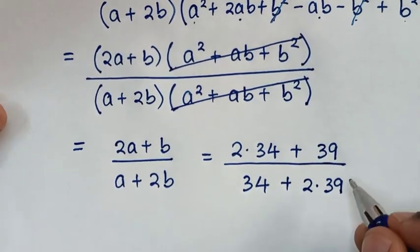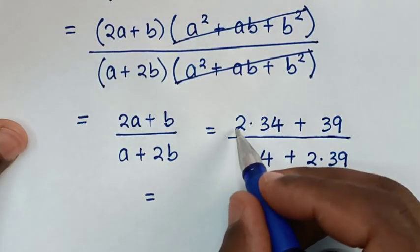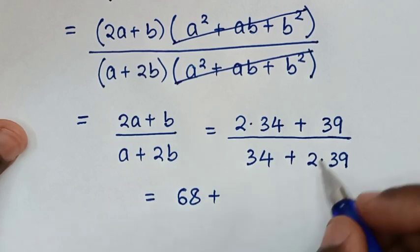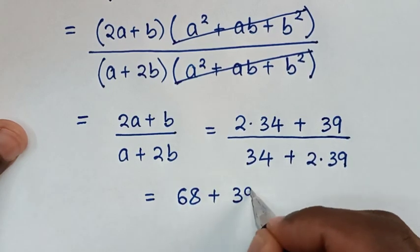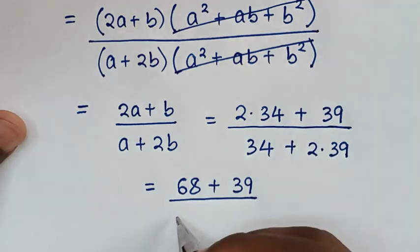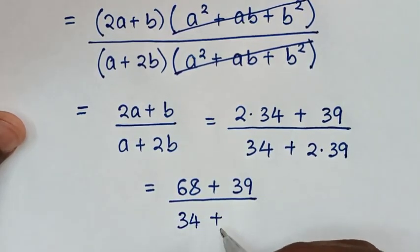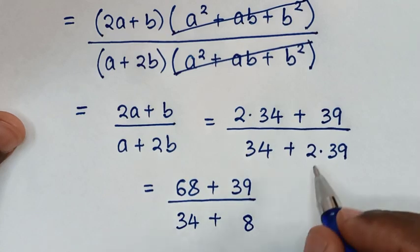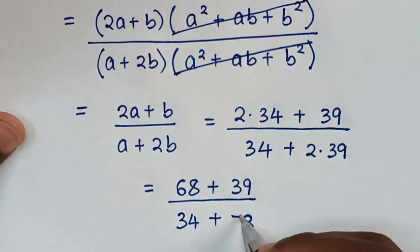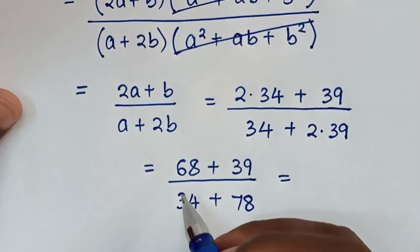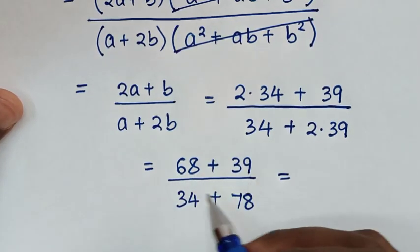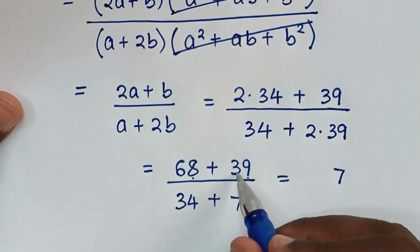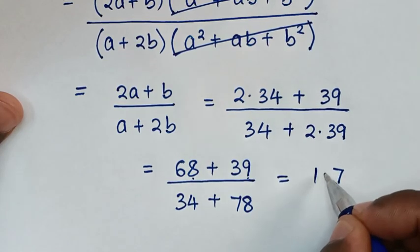Then, it will be equal to 2 times 34, it is 68. Then, plus this 39. Then, over this 34 plus 2 times 39, it is 78. Then, 6 plus 1 — it is 7. Then, it will be equal to 68 plus 39. 8 plus 9 is 17. Go with 1. 6 plus 3 is 9, plus 1 is 10.